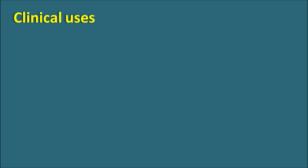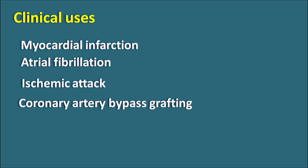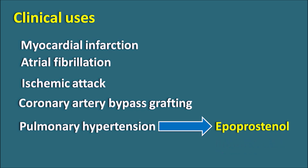Antiplatelets can be used in various conditions where there is abnormal formation of clots and activation of platelets. For example, they can be used in myocardial infarction — both in acute MI and to prevent frequent attacks. In atrial fibrillation, these drugs can be given to prevent further thrombotic events. In ischemic attacks, where there is a lack of oxygen and risk of clot formation, antiplatelets are given. After coronary artery bypass grafting, there is an increased risk of platelet aggregation and activation, so antiplatelets are used. Epoprostenol, a prostacycline analog, can also be used in pulmonary hypertension as it increases vasodilation and reduces blood pressure.